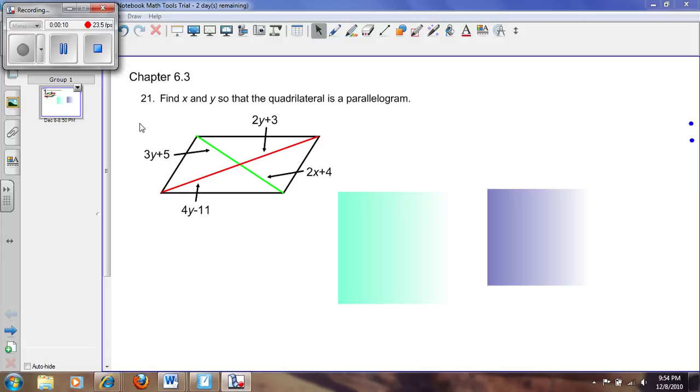Our problem is asking us to find x and y so that the quadrilateral is a parallelogram. Our diagram shows us that we have a quadrilateral and it has two diagonals.